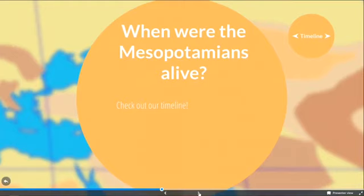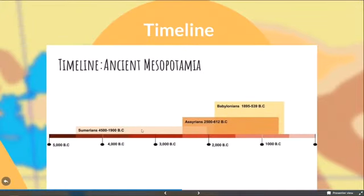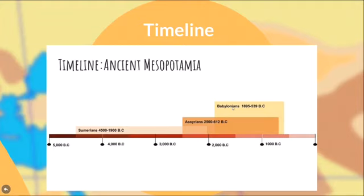When were the Mesopotamians alive? I created a timeline that we're going to build onto. The Sumerians were first on this timeline — this goes back 5000 years before the birth of Christ. Each color change is 500 years. The Assyrians came next, lasting from about 2500 BC to 612 BC. The Babylonians came after that, from around 1895 to 539 BC. When I say Mesopotamians, it's not necessarily just one group — Mesopotamia is an area that had three different groups of people.